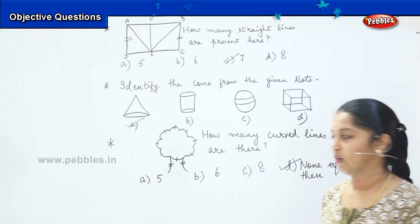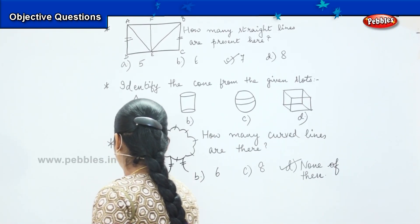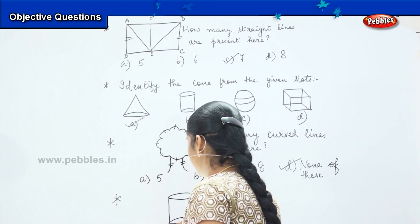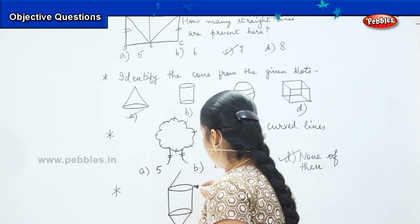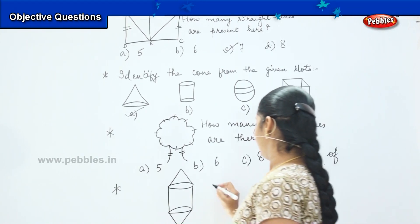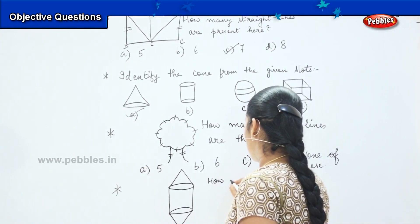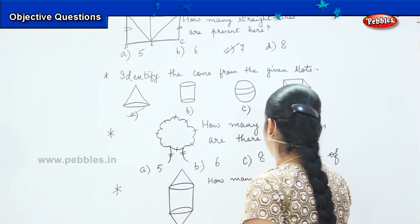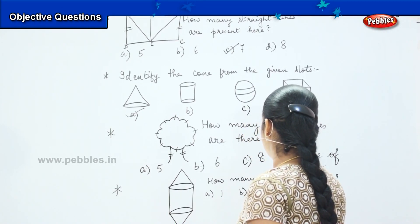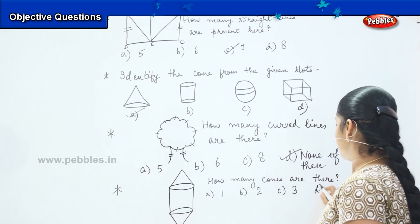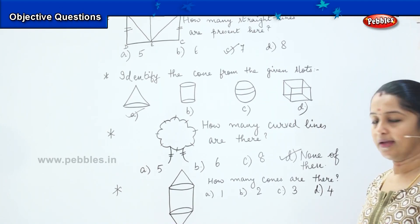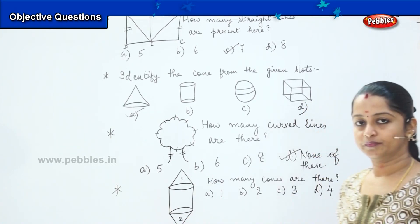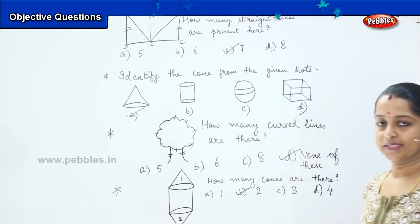Shall we proceed to the next question? My next question: I am going to draw a shape that is a mixture of a cone and a cylinder. How many cones are there? Option A: 1, B: 2, C: 3, D: 4. One is on the top and one is at the bottom — so there are two. My right answer is option B: 2.